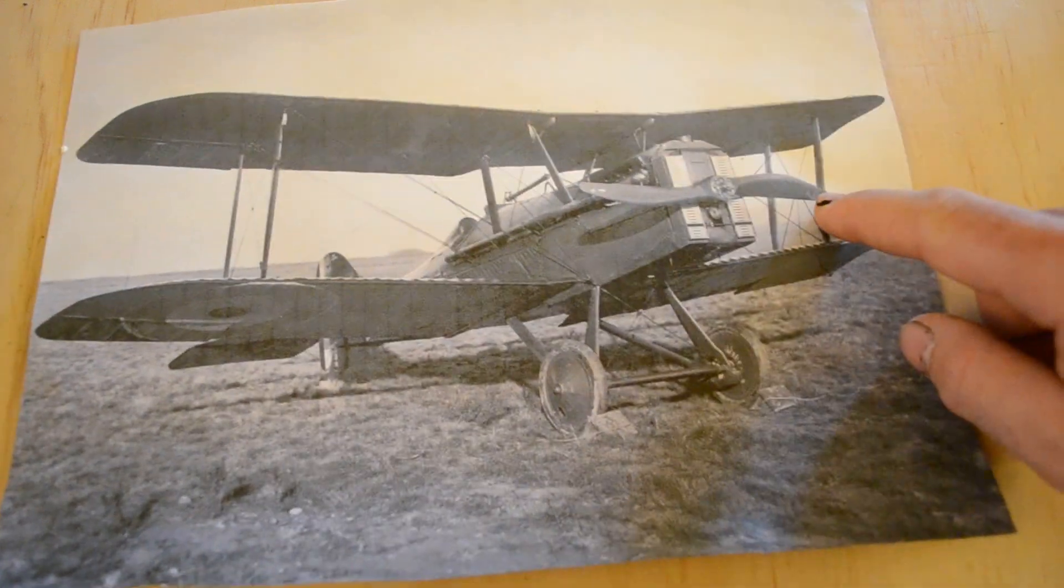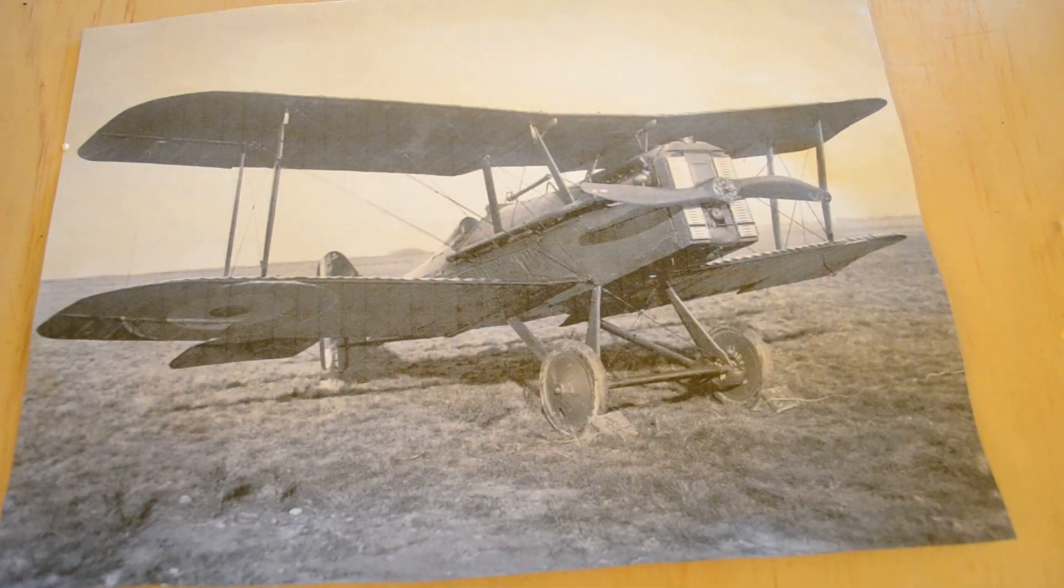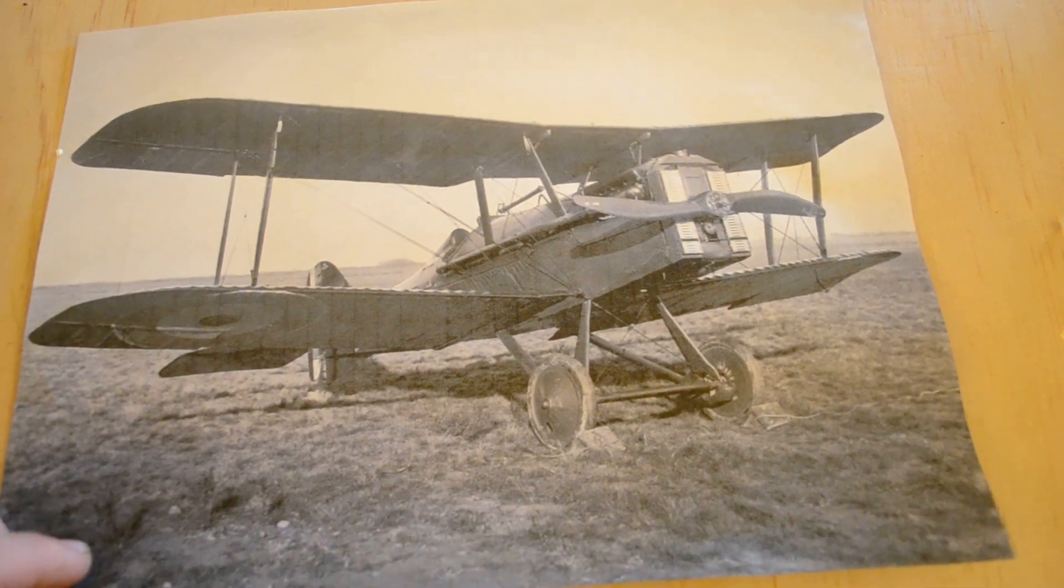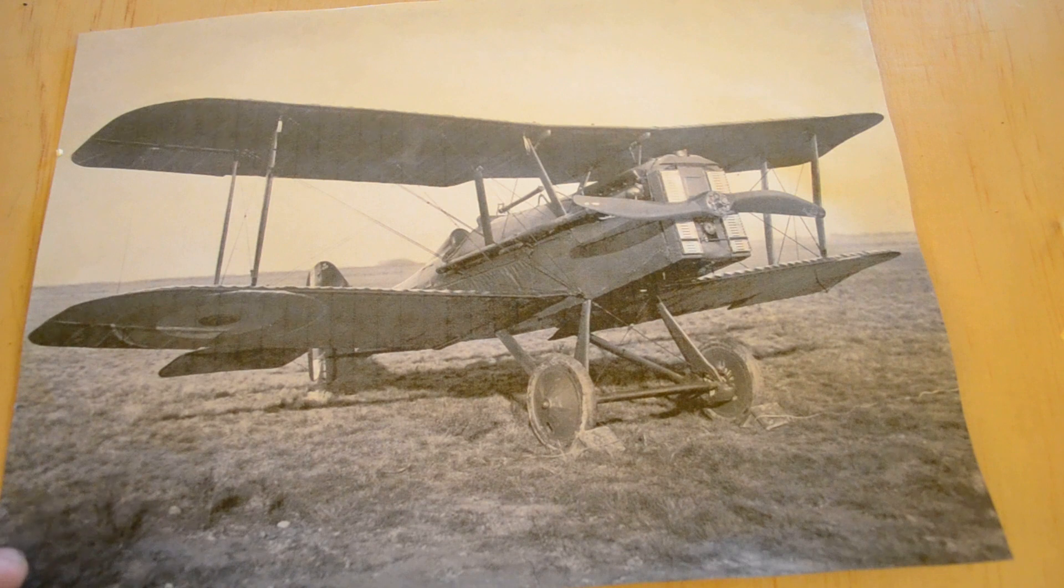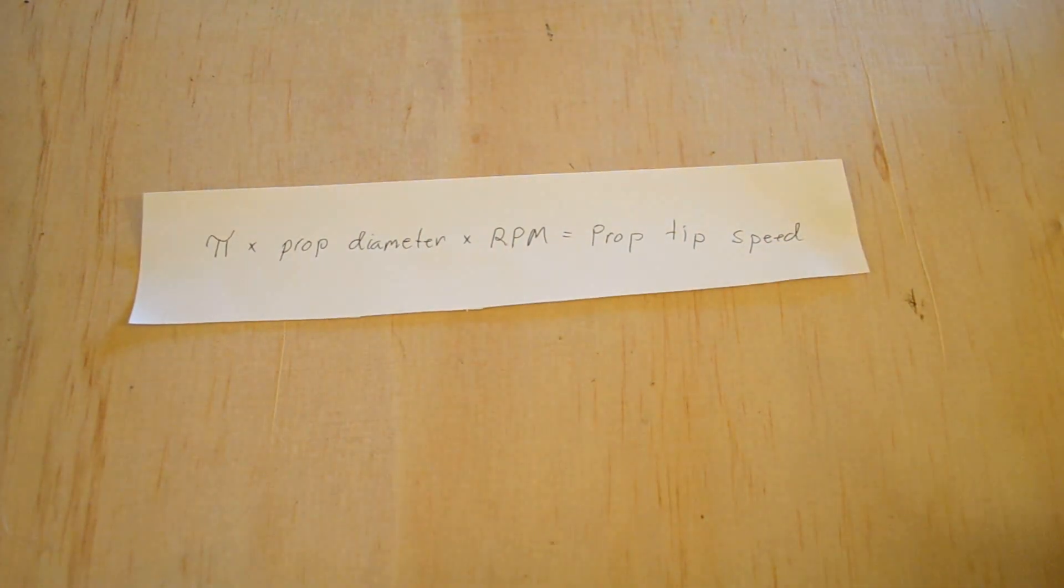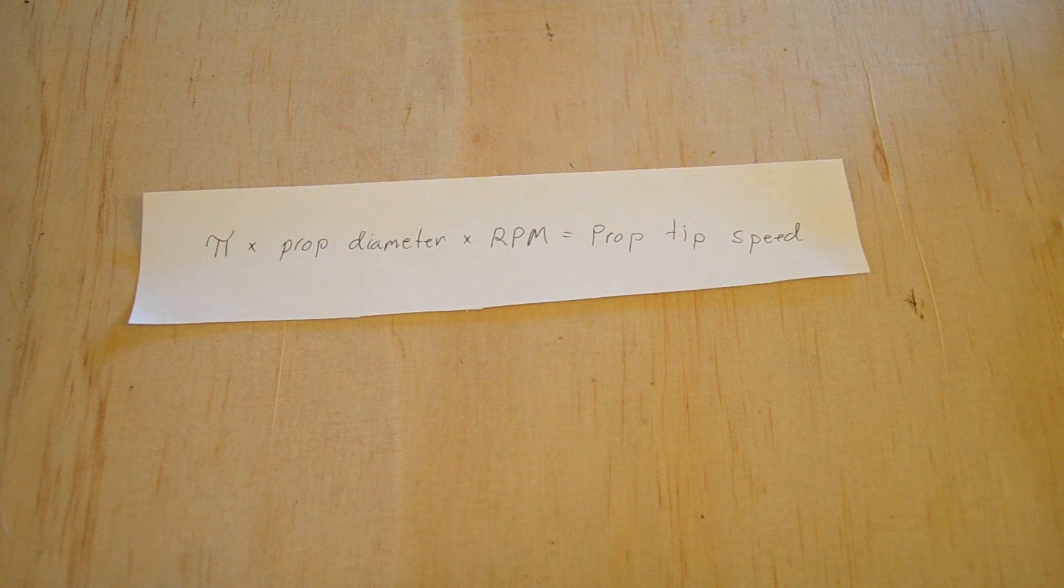Planes of the era had really big propellers. The Wolseley Viper equipped SE-5A had a propeller that was 7 feet 10.5 inches, which is absolutely huge. This is the root of the reason why it's so hard to find modern substitutes for original engines. The bigger a propeller diameter gets, the faster the propeller tip speed gets for a given RPM. This is because as the propeller gets longer, the more distance the propeller tip has to travel for each degree that the crankshaft turns.